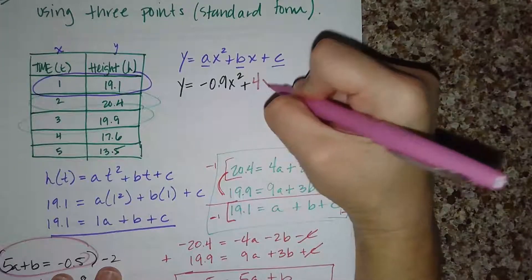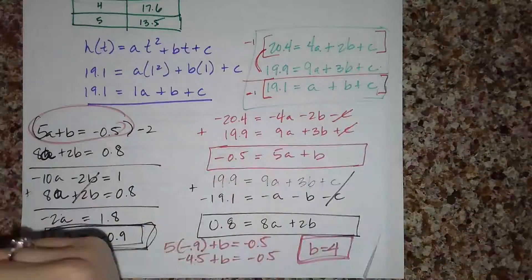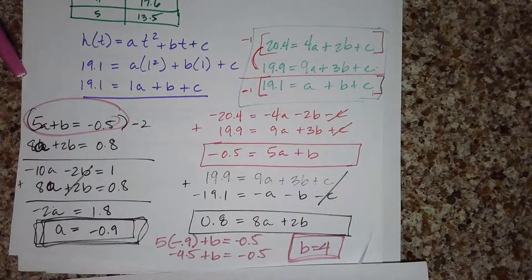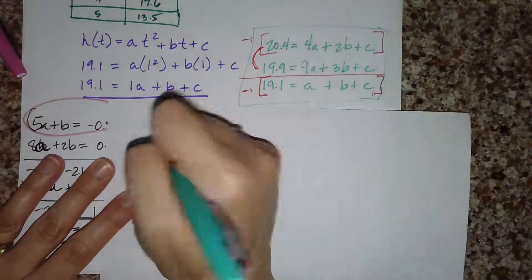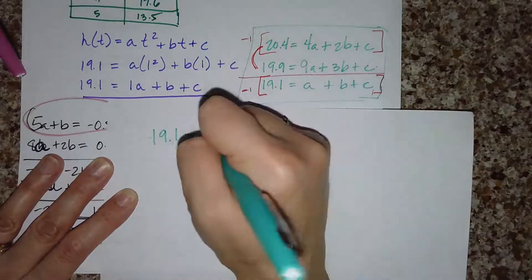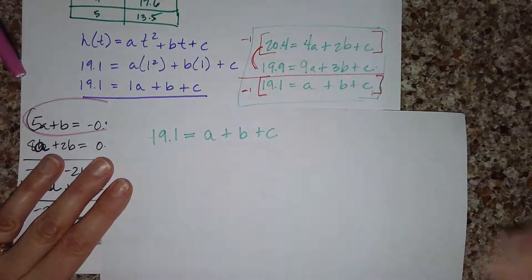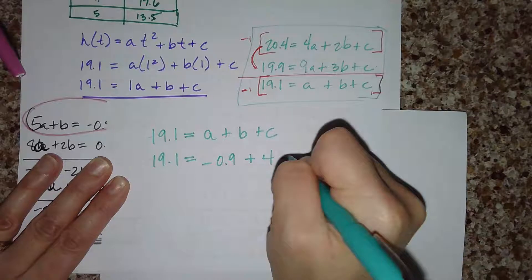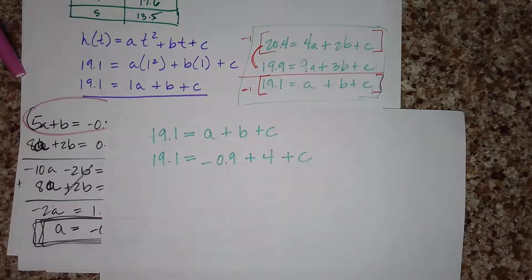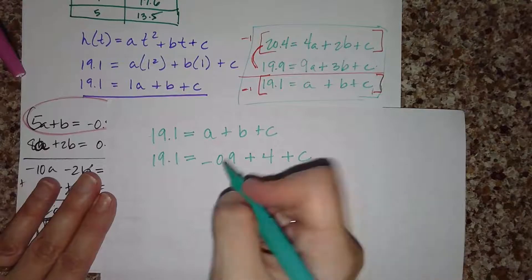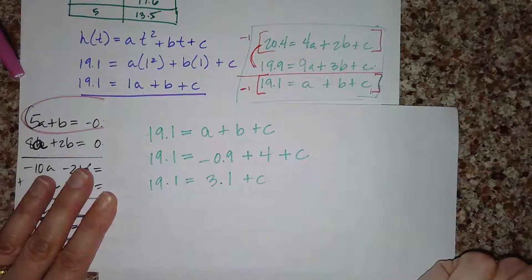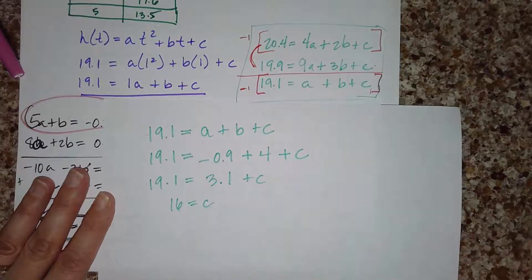Now I can plug b equals 4 back in. The last thing I need is c, so I go back to one of the original three equations: 19.1 equals a plus b plus c. Substituting a equals negative 0.9 and b equals positive 4, I get 19.1 equals 3.1 plus c. Subtracting 3.1 from both sides gives c equals 16.